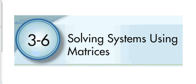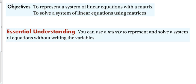Three dash six: solving systems using matrices. In this section we're going to explore one more way to solve systems of equations. We've done graphing, substitution, and elimination. The last way is solving using a matrix. This is slightly more complicated for smaller systems, but it really shines as you get to bigger and bigger systems of equations. Our objective is to represent a system of linear equations with a matrix and then solve it using matrices.